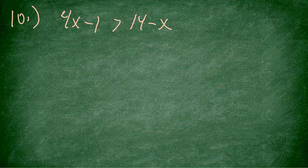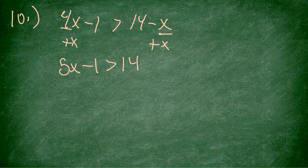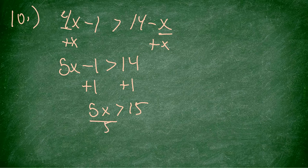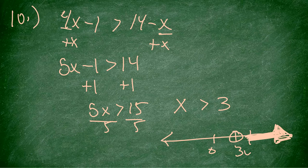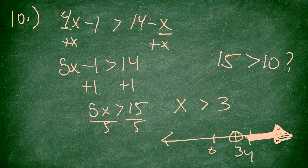Number 10 has two variables, so I get them on the same side — I add x to both sides to get 5x minus 1 is greater than 14. I add 1 to both sides: 5x is greater than 15. Divide by 5: x is greater than 3. Number line: 3, open circle, shade to the right. I check 4: 4 times 4 minus 1 is 15, which is greater than 14 minus 4 equals 10. True.